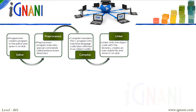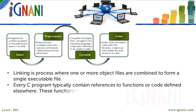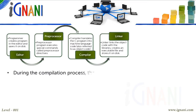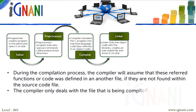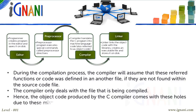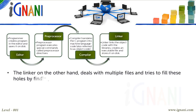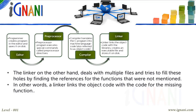Linking: This is the final step in the build process, where one or more object files are combined to form a single executable file. Every C program typically contains references to functions or code defined elsewhere — in standard libraries, libraries created by the programmer or team, or from other sources. During compilation, the compiler assumes these functions are defined in another file. Hence, the object code produced comes with holes due to missing code. The linker deals with multiple files and fills these holes by finding the references, linking the object code with the code for the missing functions.